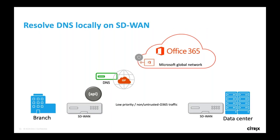With application routing in place, you can steer O365 Optimized and Allow traffic directly to the nearest front door, while keeping other traffic — including applications that still live in the data center — backhauled down the virtual path to the data center for security stack verification. Not everything has migrated to the cloud yet, so SD-WAN gives you the capability to steer traffic appropriately depending on its destination.